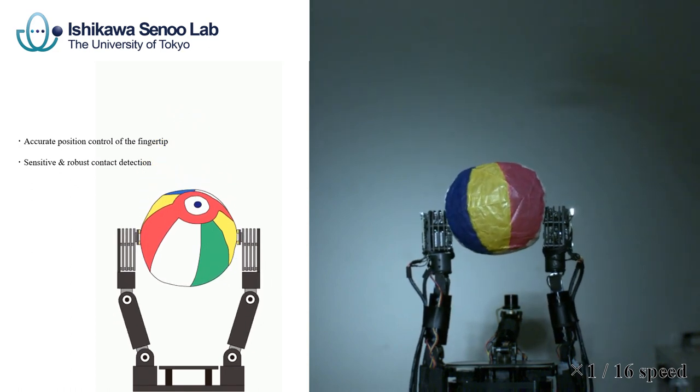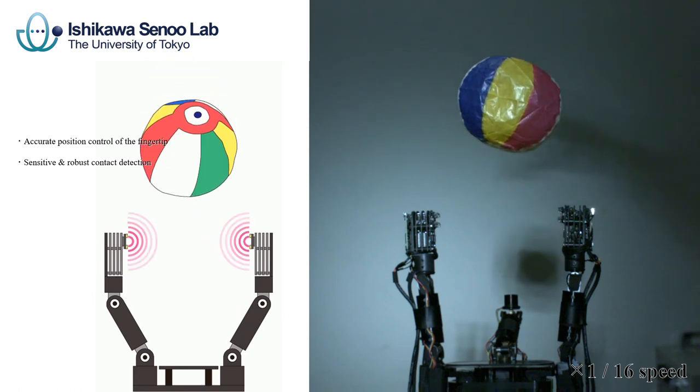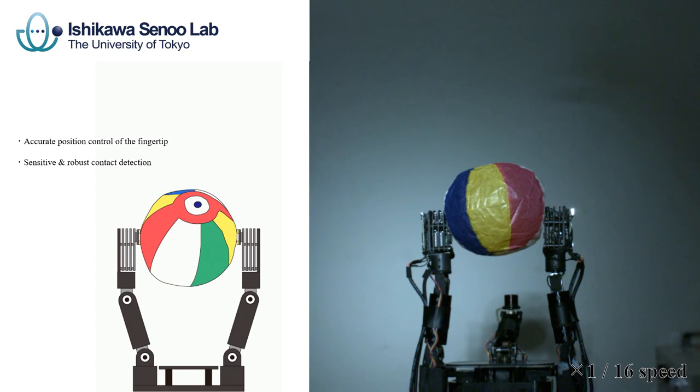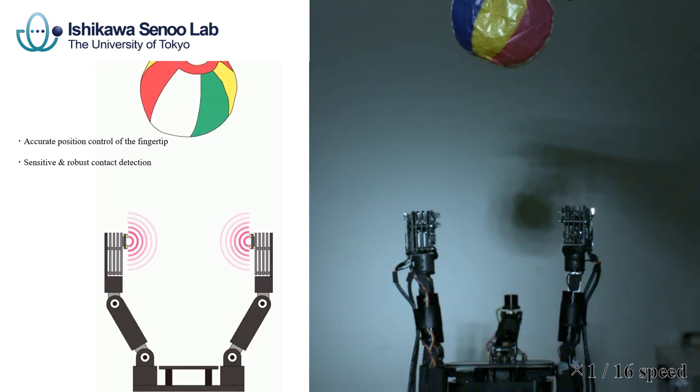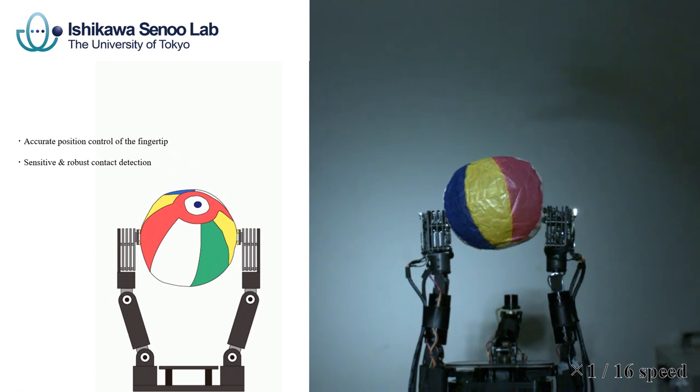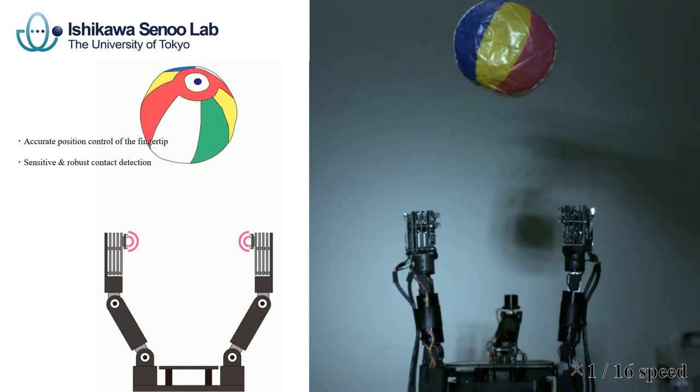The hand judges contact to the object based on the distance. Conventionally, contact between a fingertip and an object is defined as contact force exceeding a threshold value. On the other hand, we define the contact as zero distance to the object.